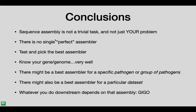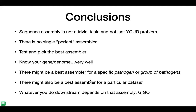Remember that sequence assembly is not a trivial task — sometimes it's just complex and methods keep developing to optimize the process. There is no single perfect assembler. Test and pick different ones, know your genome really well, and be aware of expected misassemblies. There may be a best assembler for a specific pathogen, and also different best assemblers for different data types — Illumina versus Oxford Nanopore. Whatever you do downstream depends on the quality of your assembly, so ensure it is done properly.